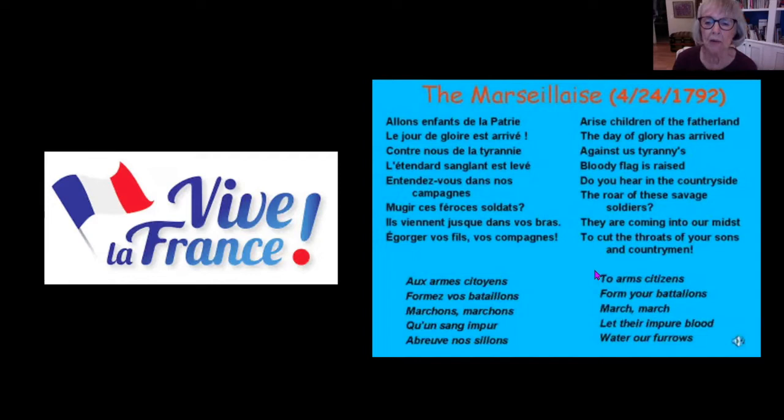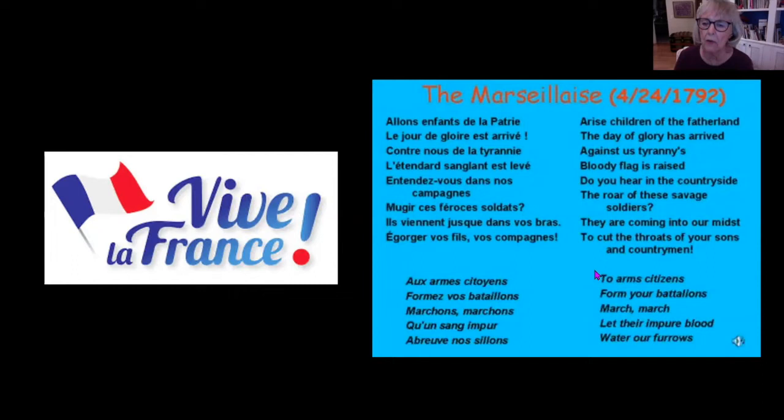There wasn't just one revolution - there were several revolutions between having a line of kings and becoming a republic. This was when other countries were coming into France, coming into Paris, trying to help preserve the royalty, the crown. The people from Marseille were marching toward the capital, and so that's why it's called the Marseillaise.